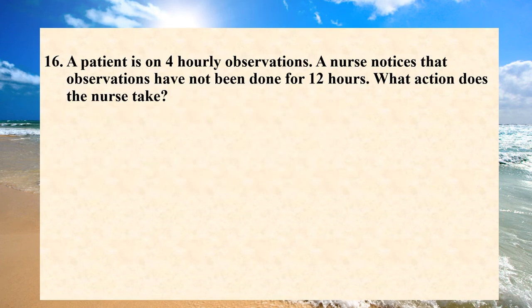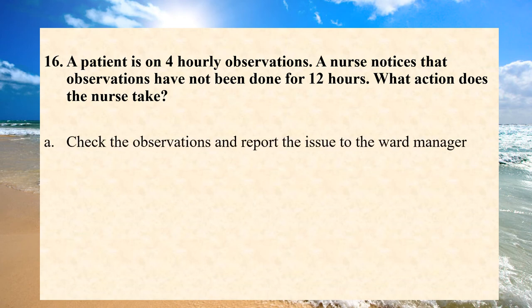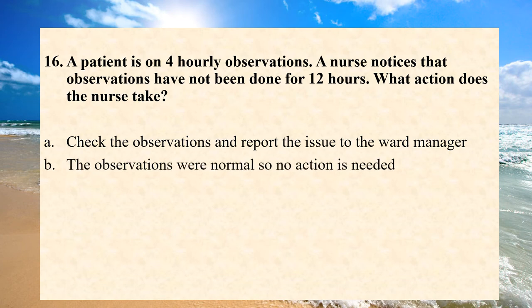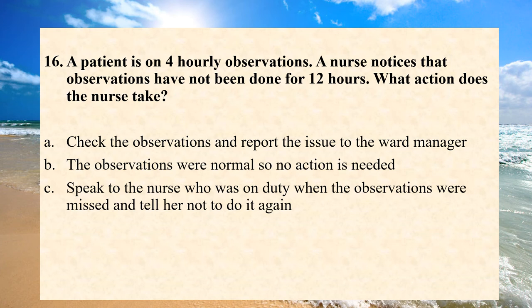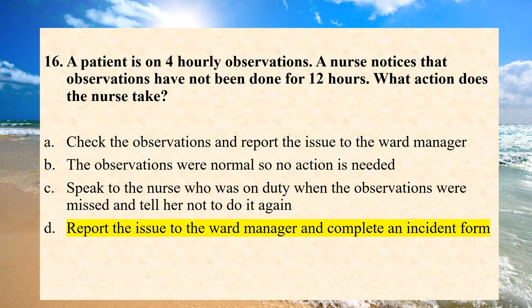A patient is on 4-hourly observations. A nurse notices that observations have not been done for 12 hours. What action does the nurse take? A. Check the observations and report the issue to the ward manager. B. The observations were normal so no action is needed. C. Speak to the nurse who was on duty when the observations were missed and tell her not to do it again. D. Report the issue to the ward manager and complete an incident form. Answer is D. Report the issue to the ward manager and complete an incident form.